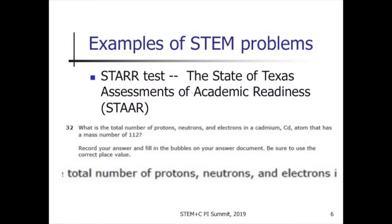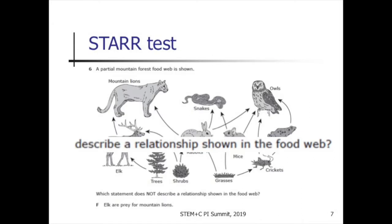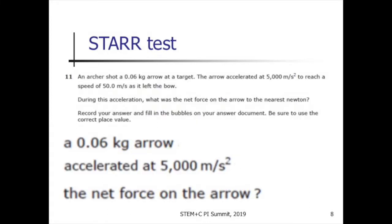Let's look at some examples from the standard test of Texas. The key thing in the first example is really a chemistry problem — the key are the entities and their relations: protons, neutrons, electrons, and numbers. Looking at another problem in ecology, again we care about entities and their relationships. Another example for physics: we care about the role of mass, acceleration, and the net force. Again, here are the entities and the relations.